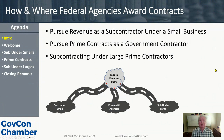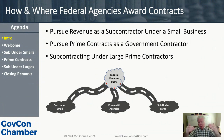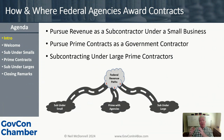What we're going to talk about today is how and where federal agencies award contracts. There are three revenue streams or paths: the first is subcontracting under a small business; the second is prime contracting with federal agencies; and the third is subcontracting under a large business. I want to talk about how to pursue each and give you tips on how to succeed.